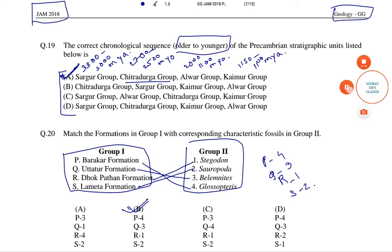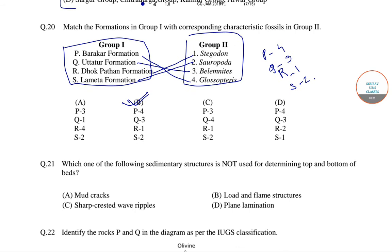In the next question, we have to find which of the following sedimentary structures are not used for determining the top and bottom of the beds. The four options are: mud cracks, sharp crested wave ripples, load and flame structure, and plain lamination.